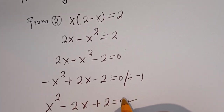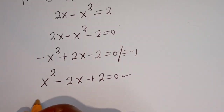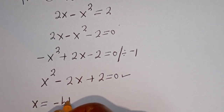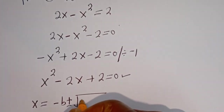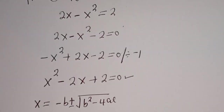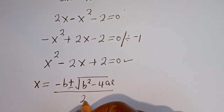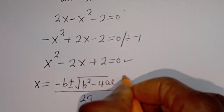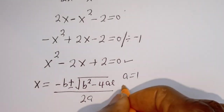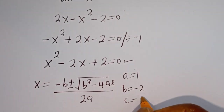This is a quadratic equation. Let's solve this using the quadratic general formula: s is equal to minus b plus or minus square root of b squared minus 4ac, all over 2a. From this equation, a is equal to 1, b is equal to minus 2, and c is equal to 2.